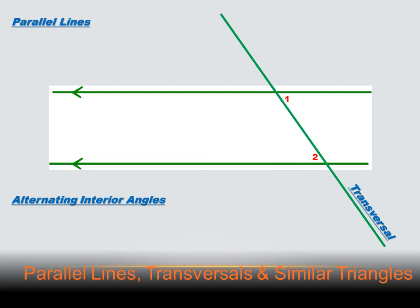We know a couple of other things as well. We know that opposite angles are equal — angle one and the angle directly opposite are going to have the same number of degrees. And angle eight is going to have the same number of degrees as angle two. So angles one, two, seven, and eight all have the same number of degrees. We also know that there are 180 degrees along a straight line, so this angle is going to be 180 degrees minus angle seven, and this angle is 180 degrees minus angle two. So angles four and six are also equal.